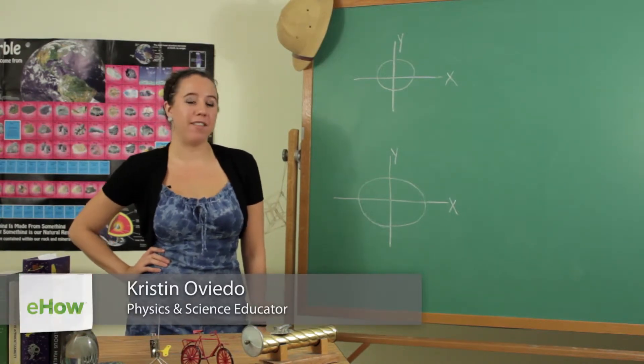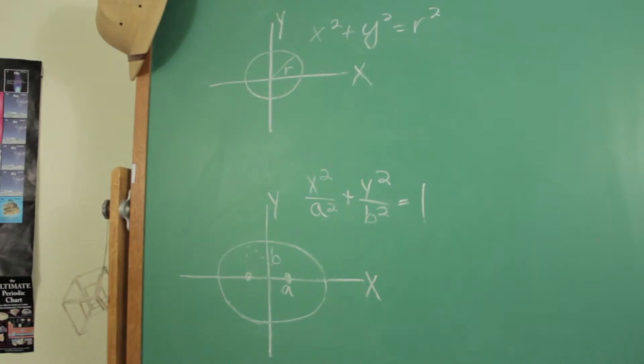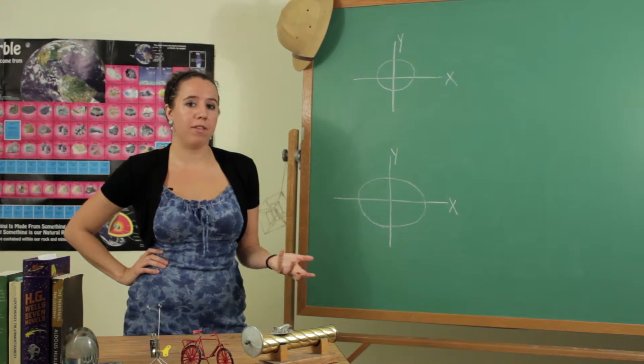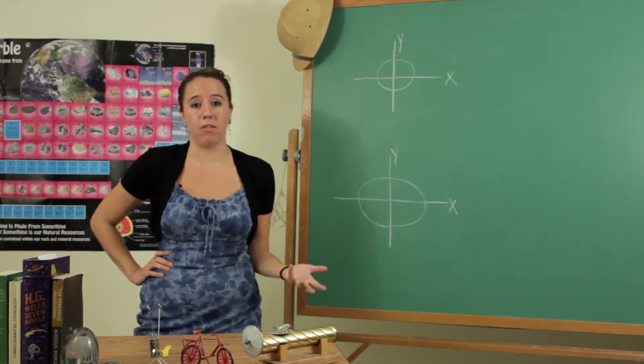Hi, I'm Kristen Oviedo and this is the geometric formula for ovals. So mathematically an oval is actually an ellipse and it has a very specific set of parameters that define it just like a circle does.